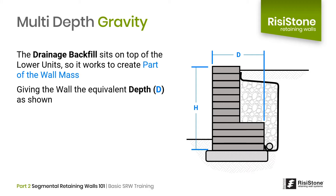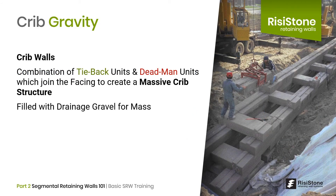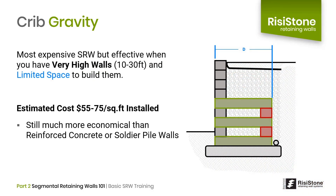The multi-depth wall utilizes different depth SRW units and incorporates the drainage backfill as part of the wall weight, creating a composite mass essentially equal to the depth of the bottom block. Another type of gravity wall is a crib wall, where a combination of tieback units and dead men units join the front facing to form a crib, which is then filled with drainage aggregate for weight, once again creating a composite mass. This type is typically the most expensive SRW, but it can be ideal for situations where very high walls are required and space is limited. Even at $55 to $75 per square foot, crib walls are still more economical than reinforced concrete or soldier pile walls.